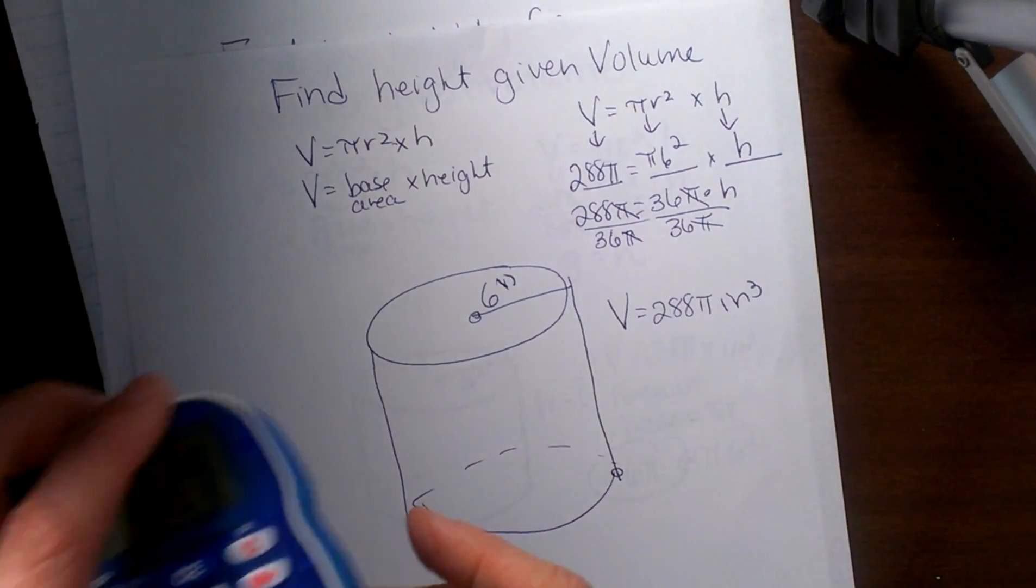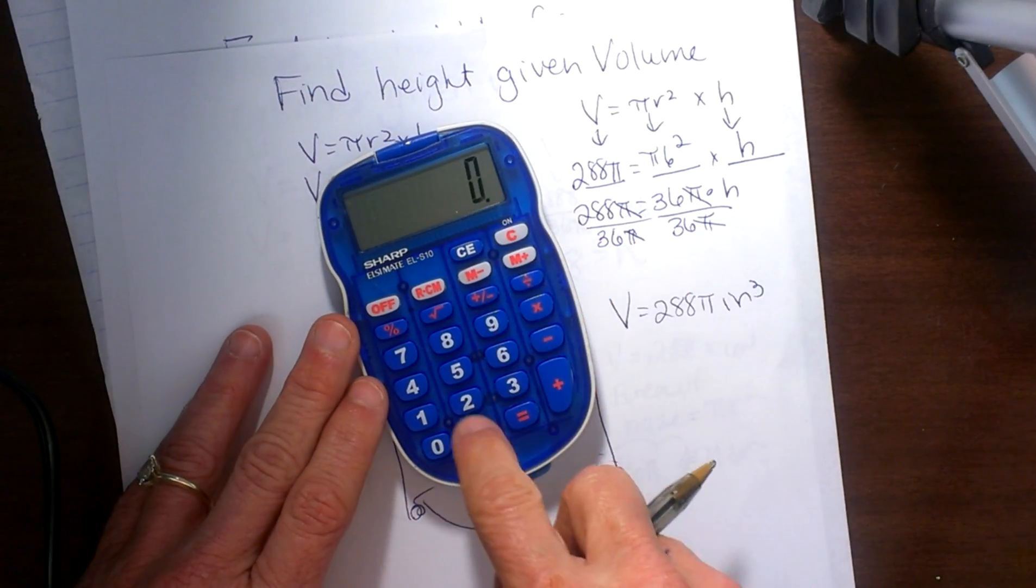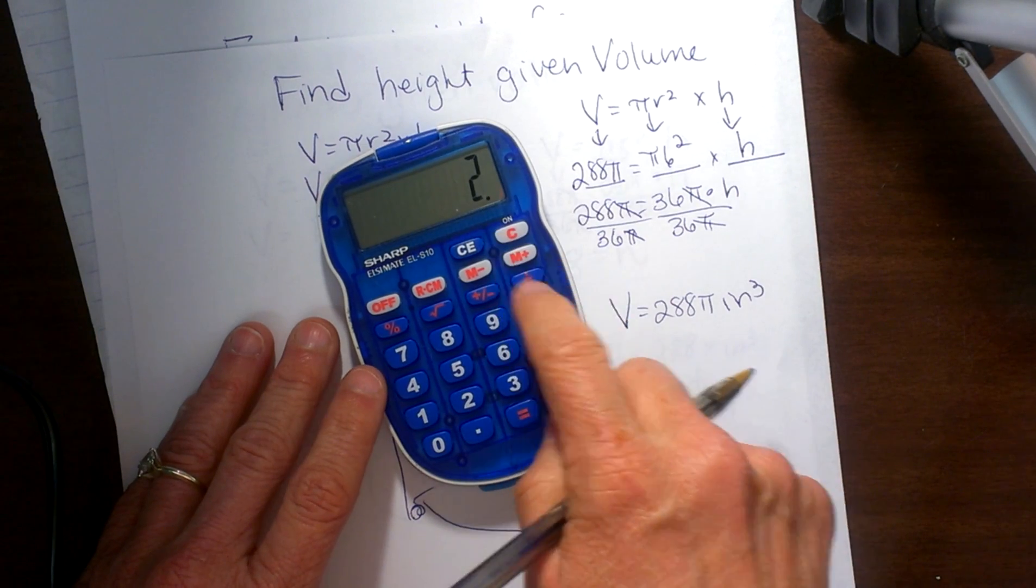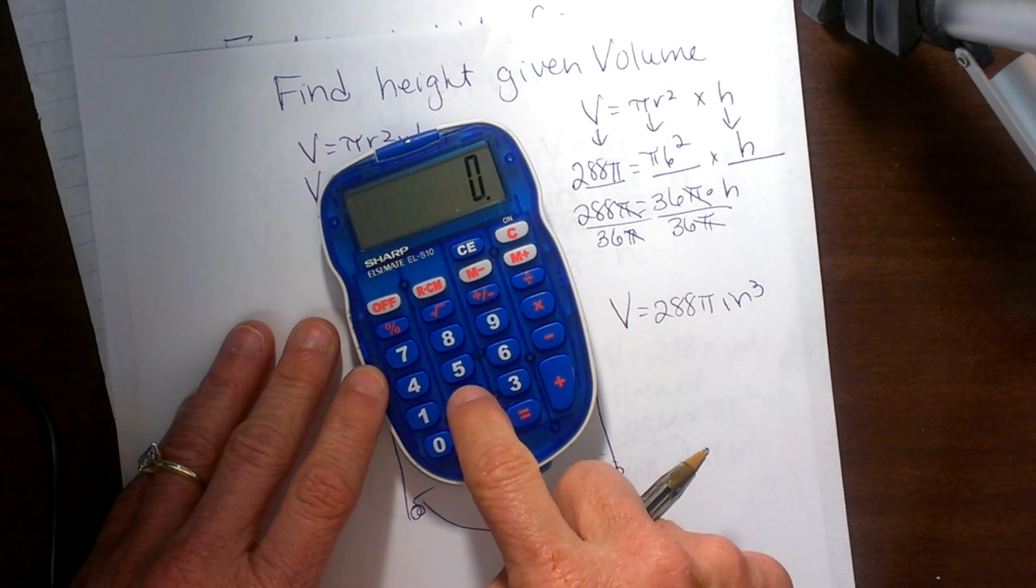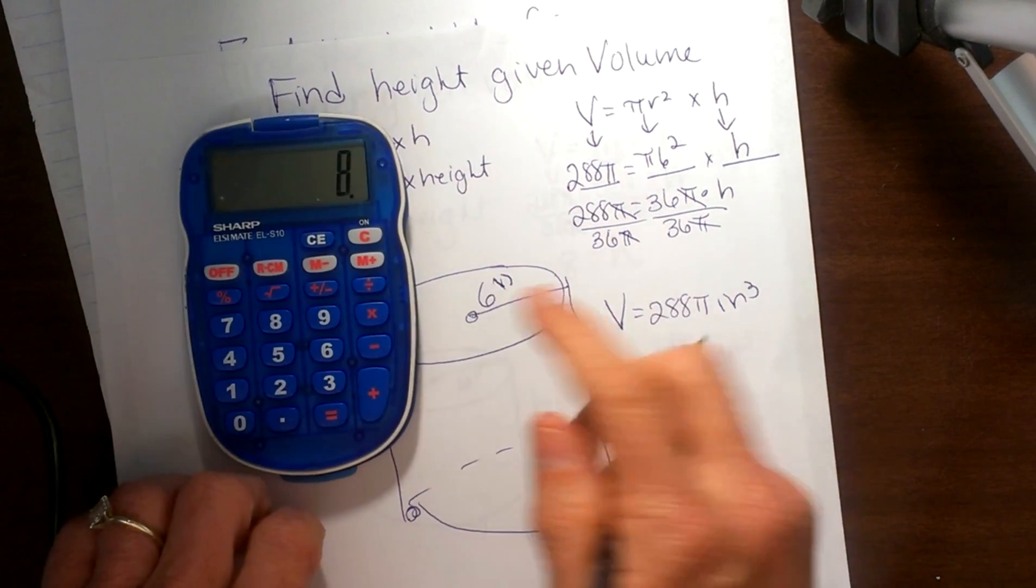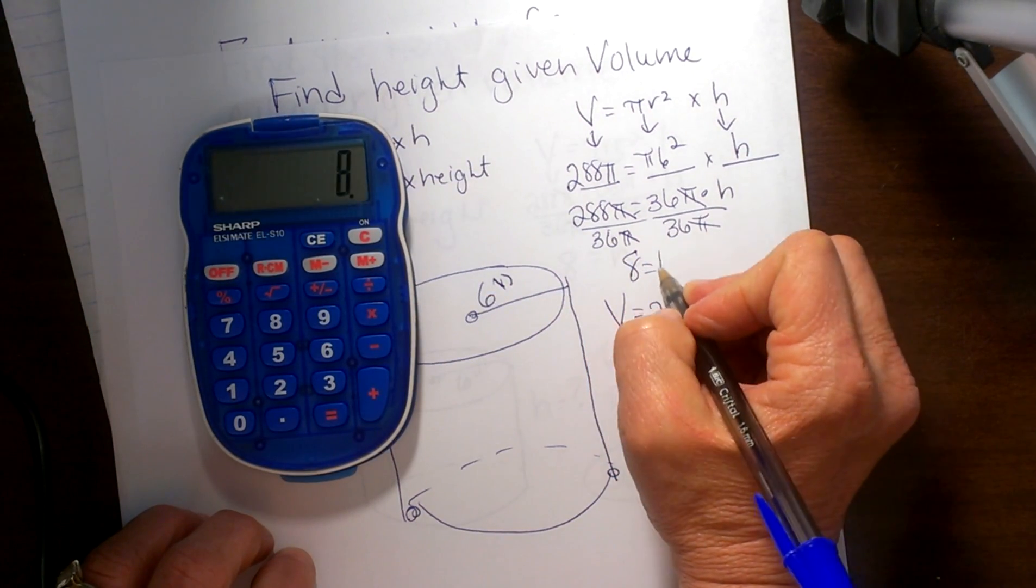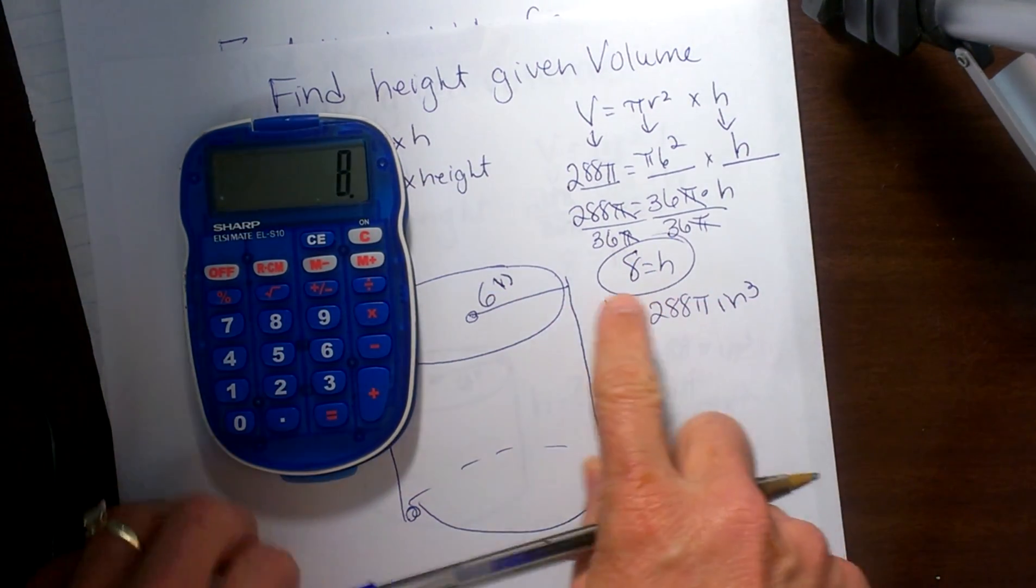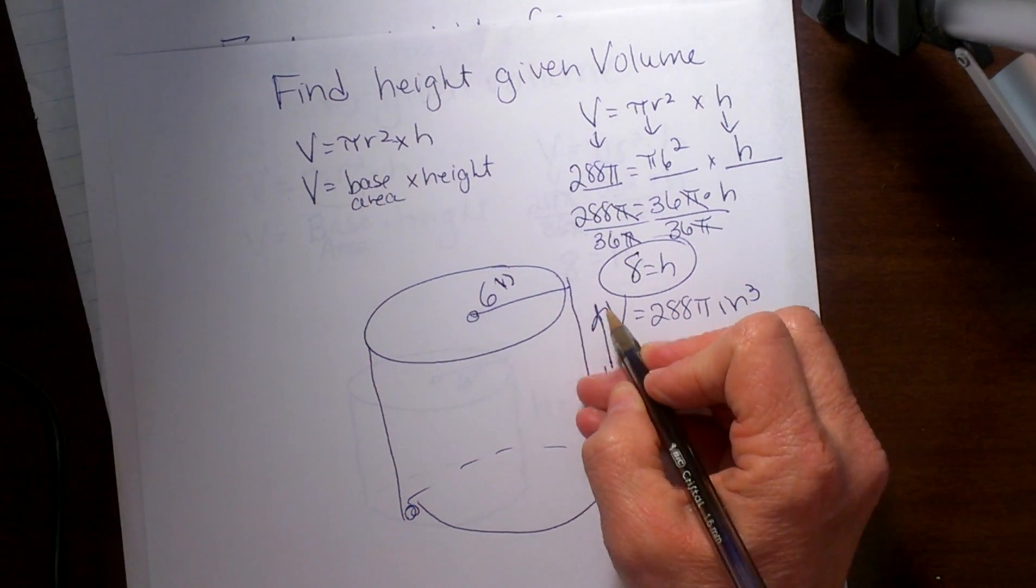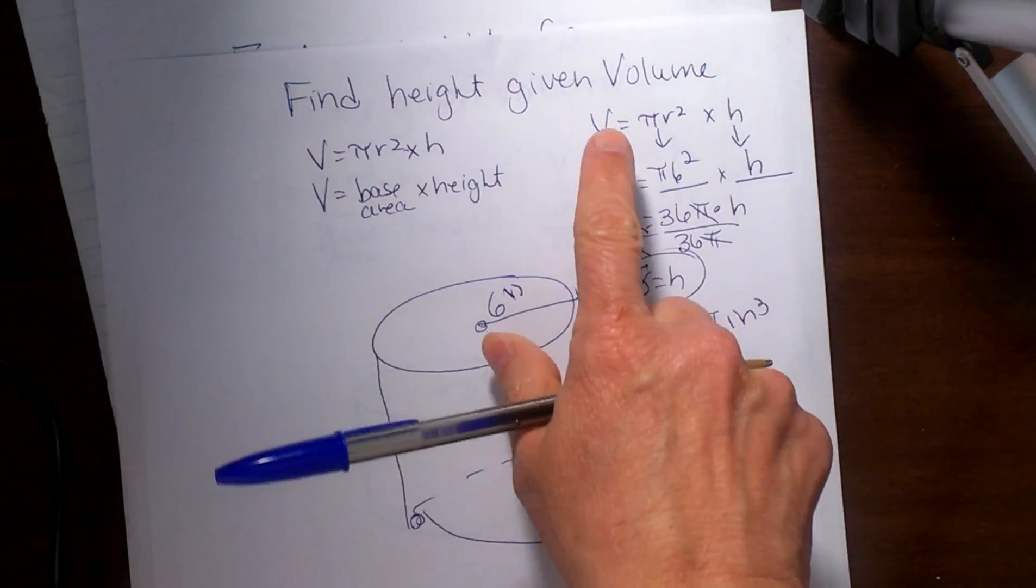So now I just need to take 288 and divide it by 36 and that gives me 8. So 8 would be my height and that is how you find the height of this cylinder given the volume.